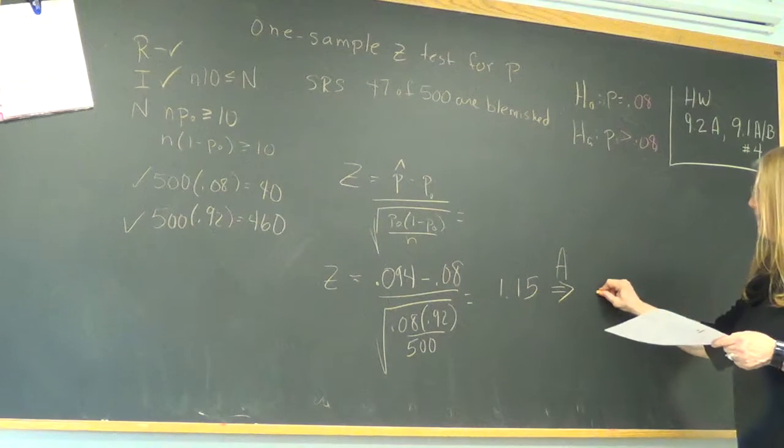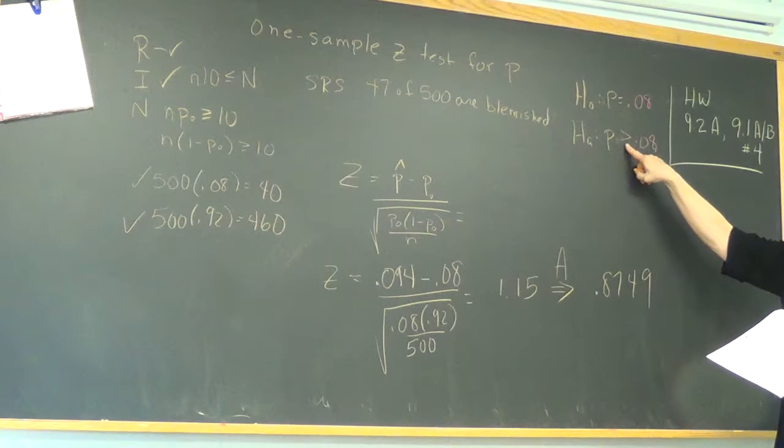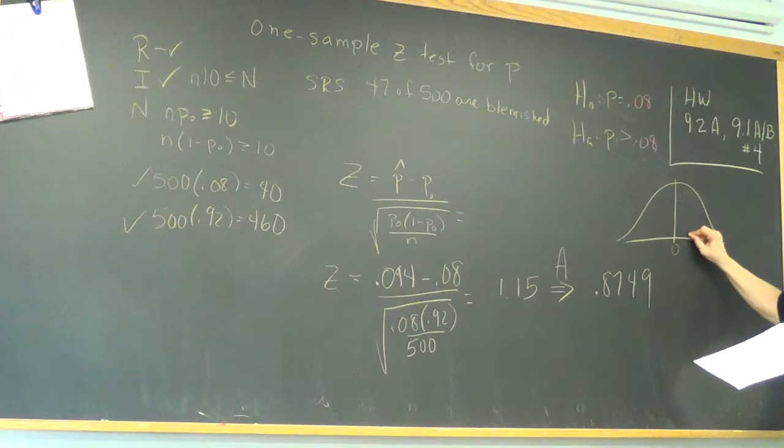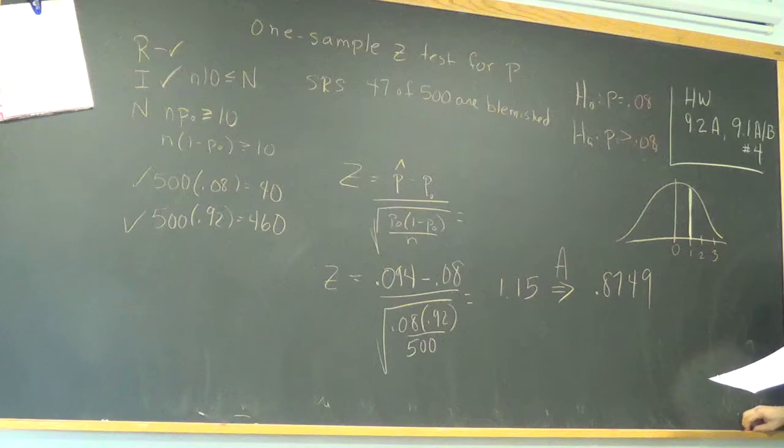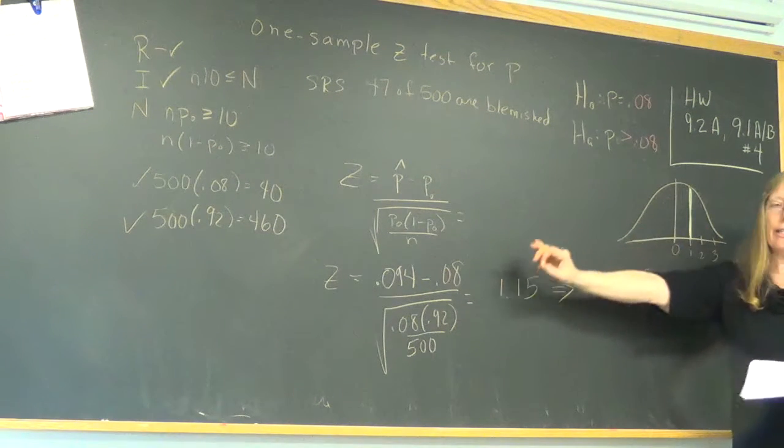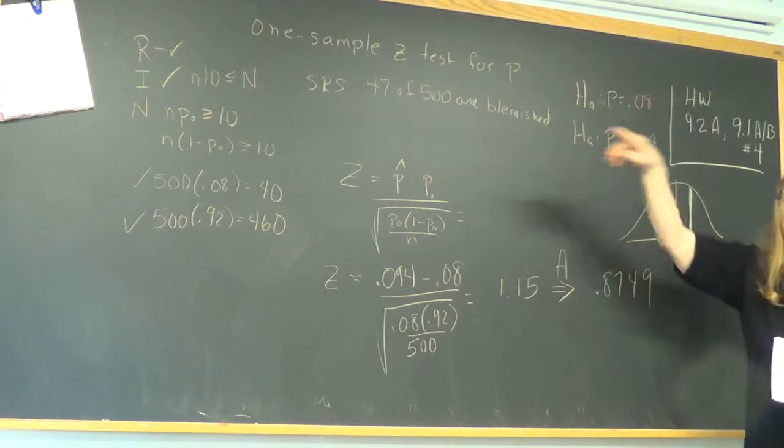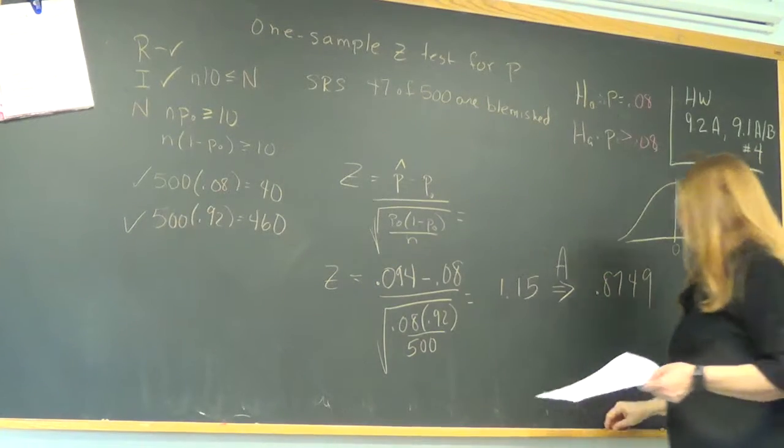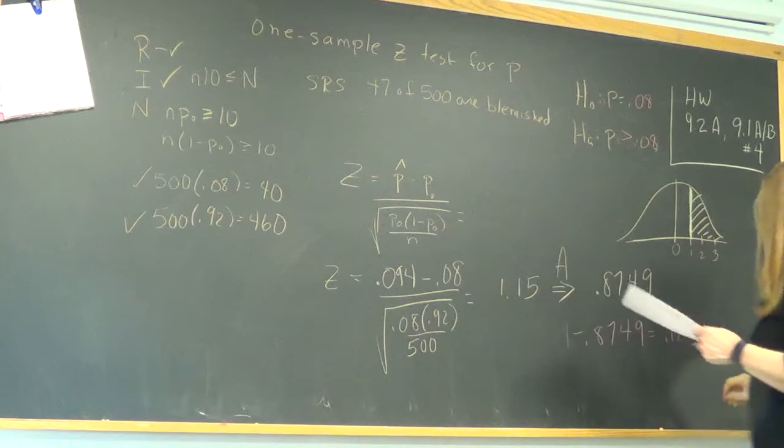So instead of less than, instead of shading to the left, I'm going to look at the alternative hypothesis and shade in the direction that it commands me to. So in the basketball example, it went that way. Here I'm interested in this probability this way. So do you recall what to do with this number? Maggie? One minus. Right. Of course you do. You've been well taught. So I got something about 12, 13 percent.